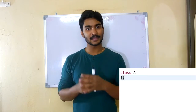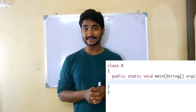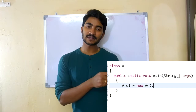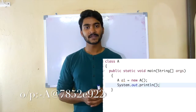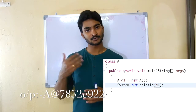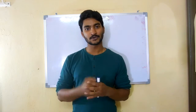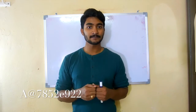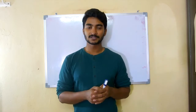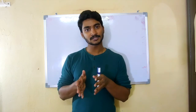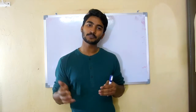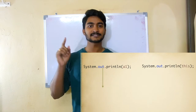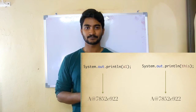I'm going to create a class called Class A and create an object: 'A a1 = new A'. Here a1 is a reference variable. If I print a1, it will return the memory address where the object is created. According to the definition, if I print 'this' inside that class, it should return the same memory address as a1.